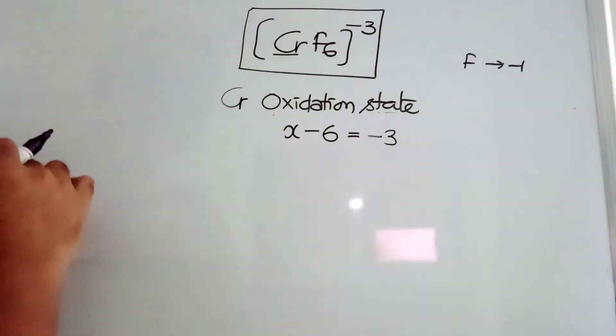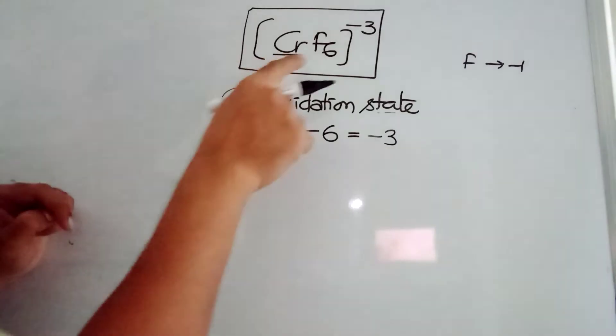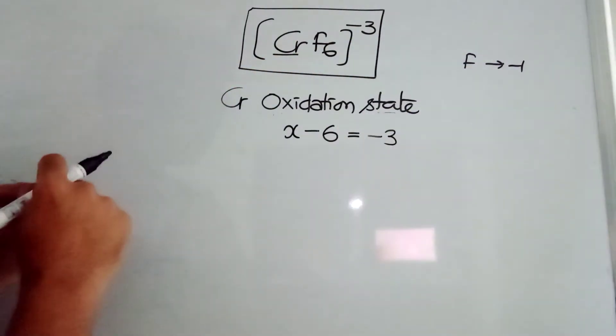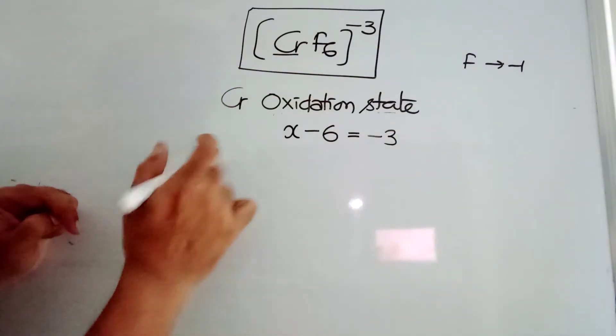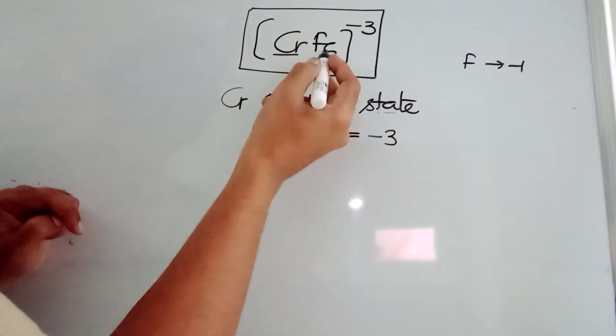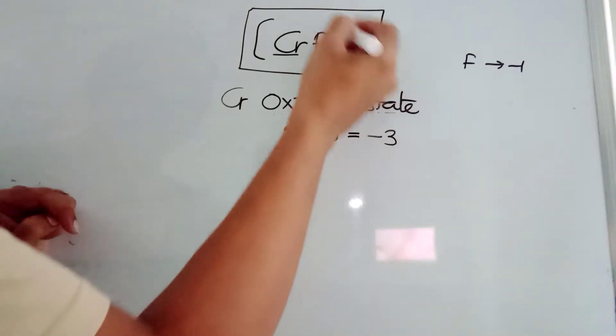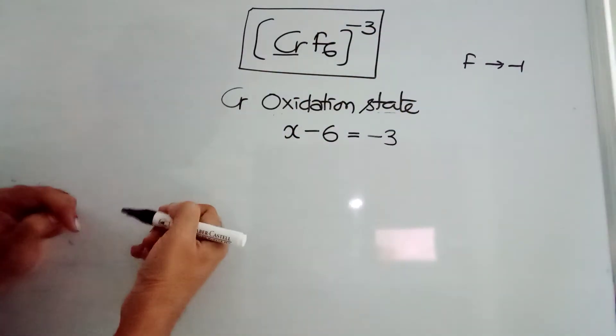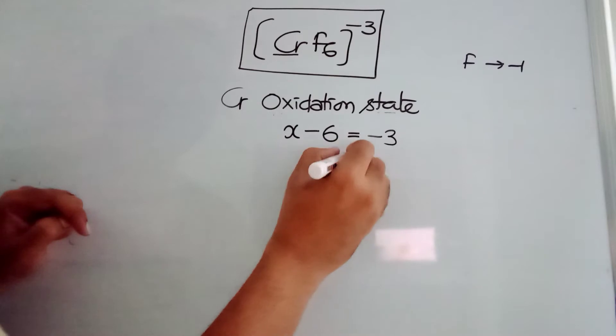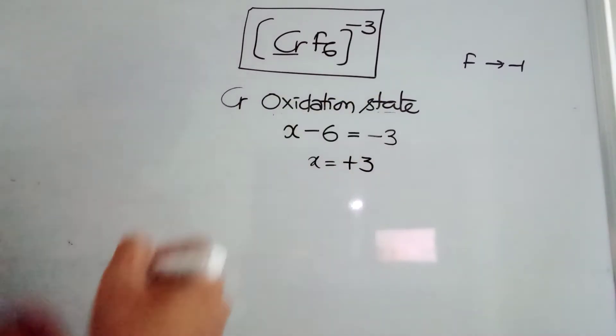Chromium oxidation state we need to find out first. We know fluorine oxidation state is minus 1. So chromium oxidation state, if you consider X, 6 fluorines are there, each minus 1. So minus 6 is equal to the net charge of the ion, that is minus 3. So X is equal to plus 3. Oxidation state of chromium in this compound is plus 3.